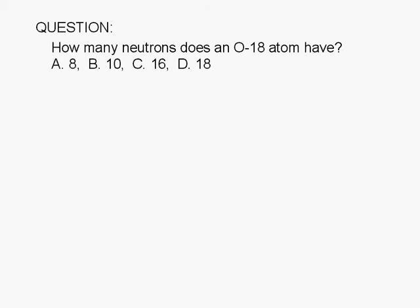How many neutrons does an oxygen-18 atom have? A. 8, B. 10, C. 16, or D. 18.